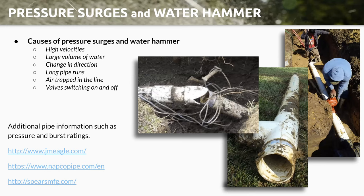There are several things that will cause surges and water hammer: high velocities, large volumes of water — we've already discussed that — you can see the damages those surges can produce. Change in direction. Long pipe runs. And sometimes changing direction and long pipe runs are just part of an irrigation system. Air getting trapped in the line — that is a huge problem, because water does not compress, but air does compress. We'll run through a calculation to see how much surge can actually occur when you have trapped air inside your mainline. And then your valve switching on and off — these are all causes of pressure surges and water hammer.